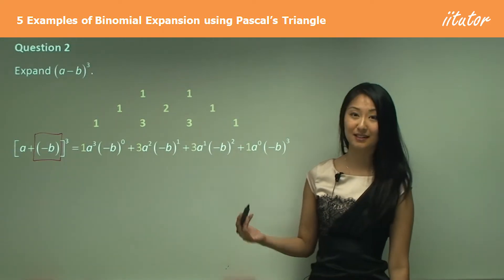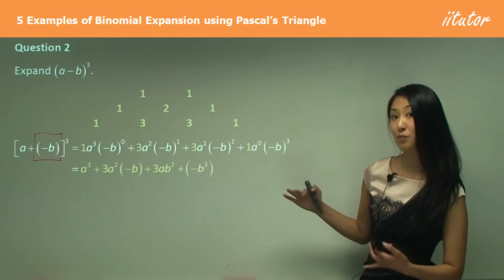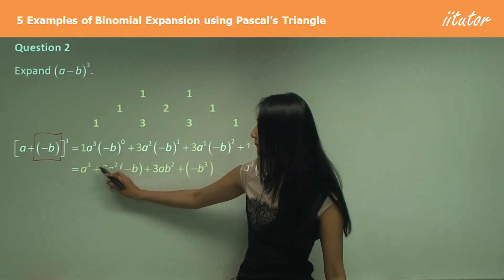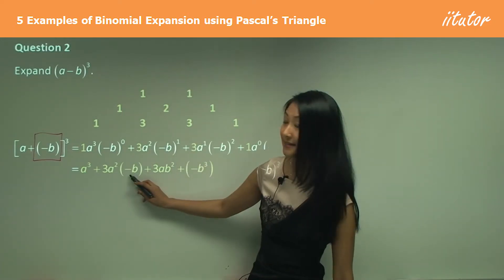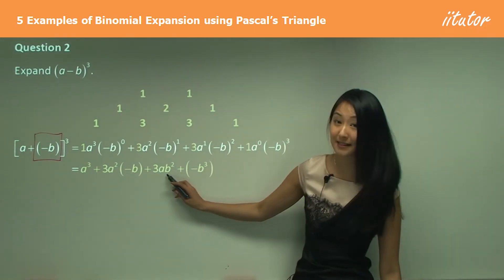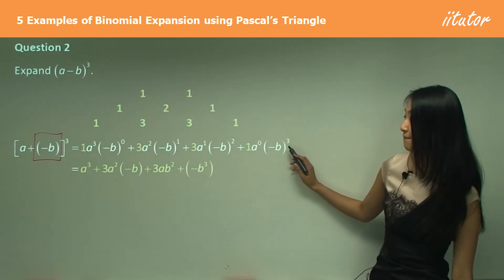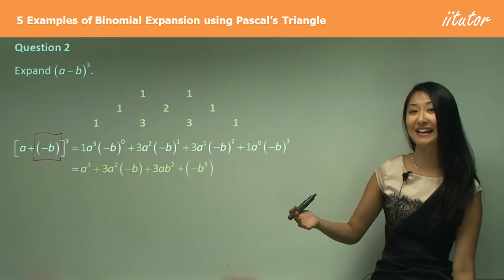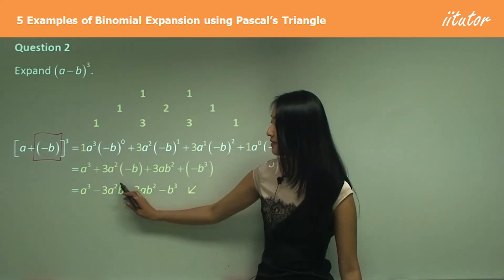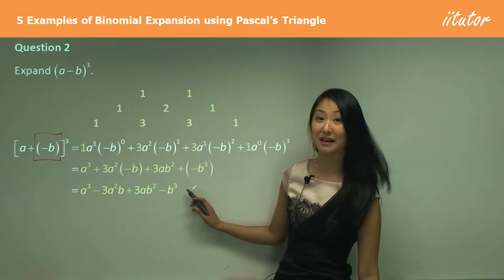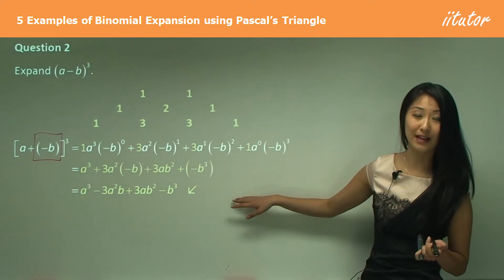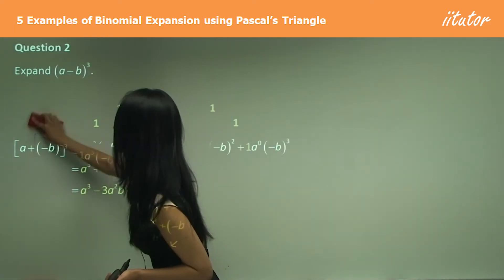Now just simplify. This one just becomes a cubed. Negative b to the power of one remains negative b. Negative b squared — that squared gets rid of the negative, so it just becomes b squared. And this just becomes negative b cubed, because a negative cubed is still negative. So once you fully expand that, you get a³ minus 3a²b plus 3ab² minus b³. When the second term is slightly different, it may take a few more steps in simplification, but that's the only difference.